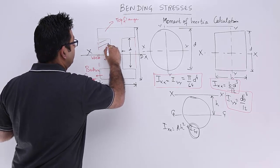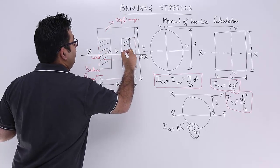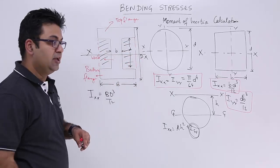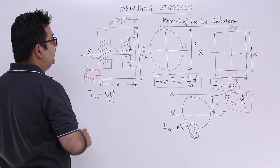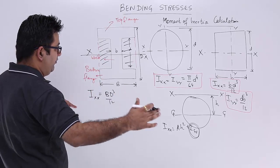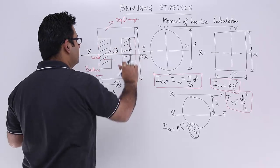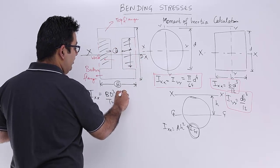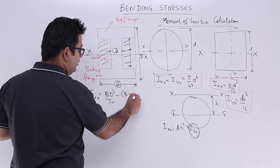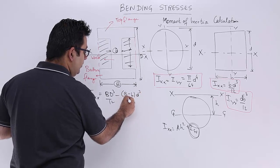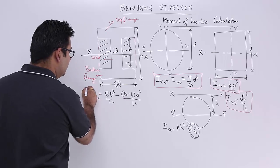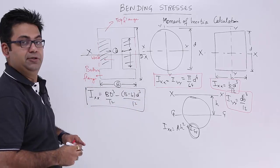So when you join them, you get a rectangle of width as capital B minus small b and height as small d. So you will have to subtract it, which will be this into d cube by 12. So this is the moment of inertia for an I-section.